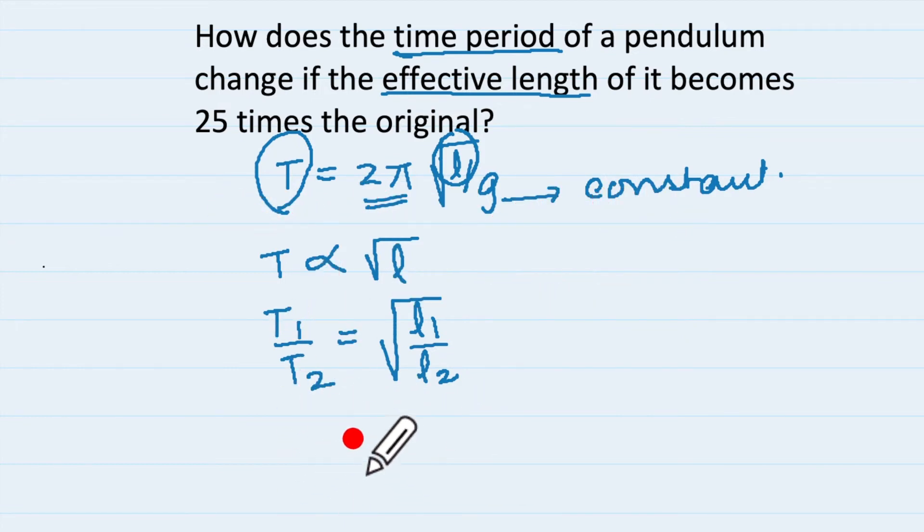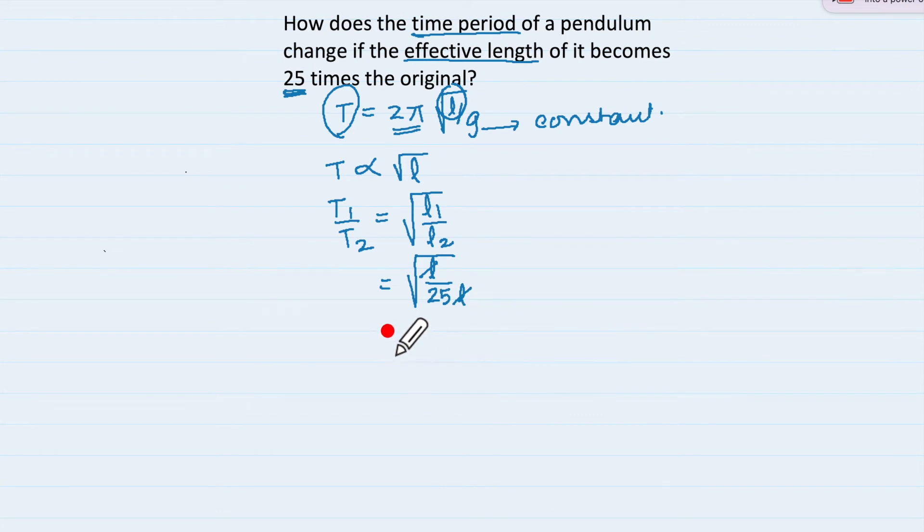Now let us substitute. Our time period t1 upon t2 will become therefore under root if we say original length as l, then the new length has become 25 times the original means it is 25 times l. L l gets cancelled which is equal to under root 1 upon 25 and that will be equal to 1 upon 5.